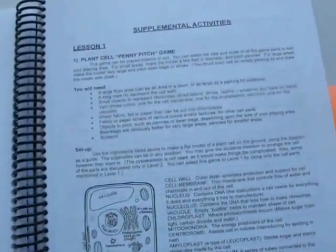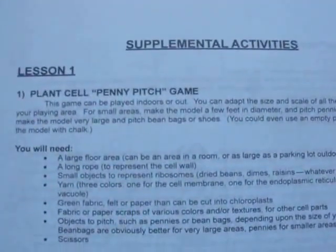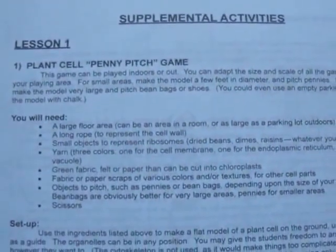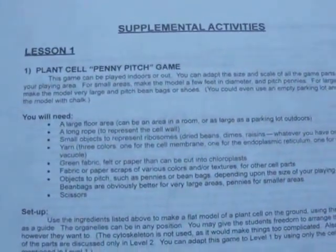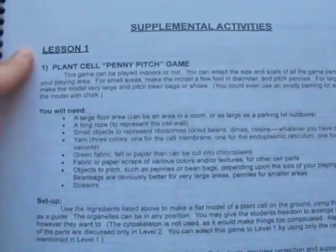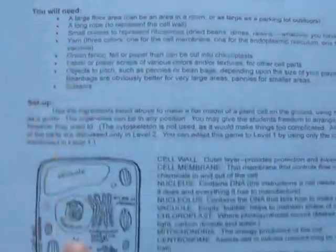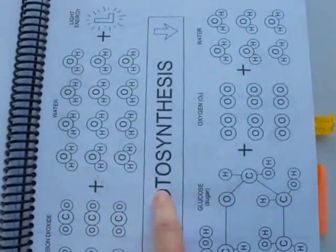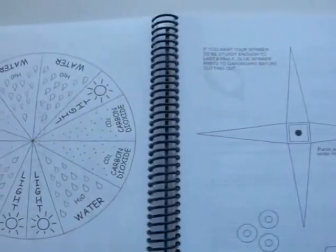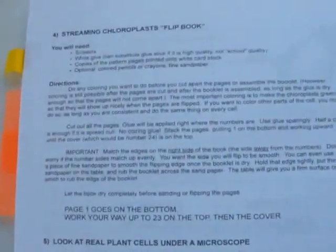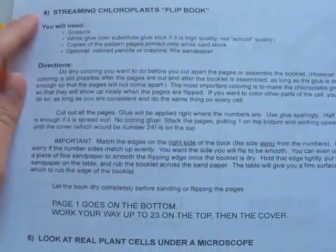After the answer key, you have an activity section. Here is Lesson 1, some extra activities. There will be games, little experiments of some kind, just various things. For Lesson 1, here's one option for an activity. It's a game. Here's another option, a game. You print this out and it's like a little board game thing. Here are some more parts to it.